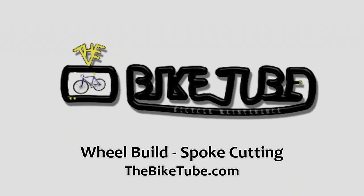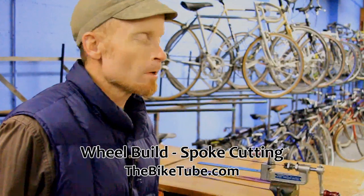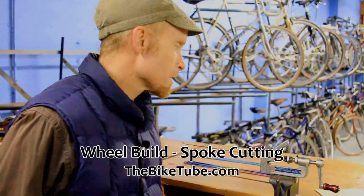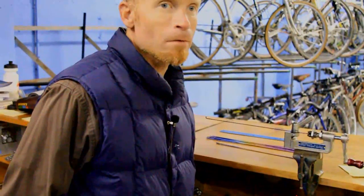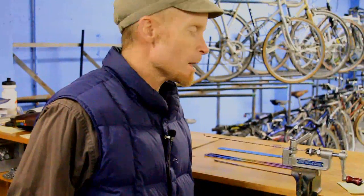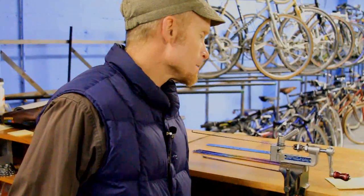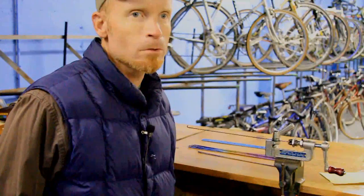Bikes make me smile. So we need 18 spokes for the drive side which will be 297 millimeters, and then we need 18 spokes for the non-drive side which will be 302 millimeters.